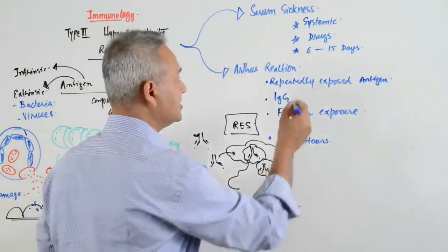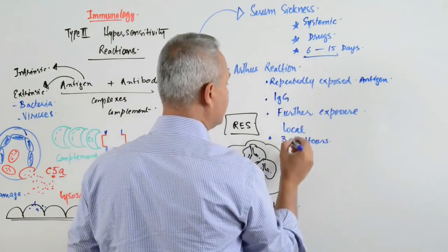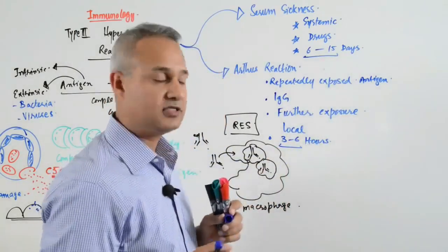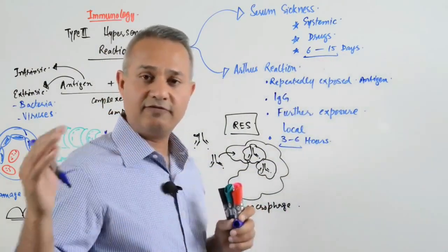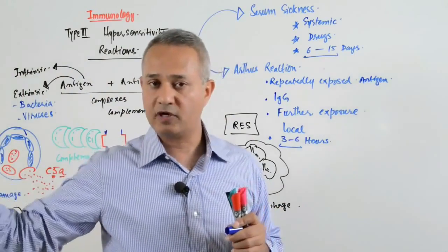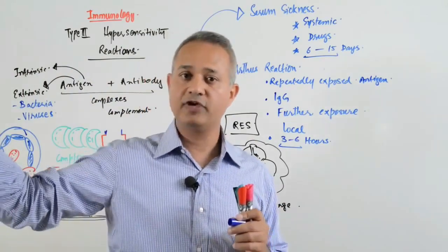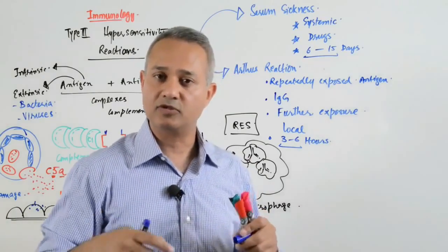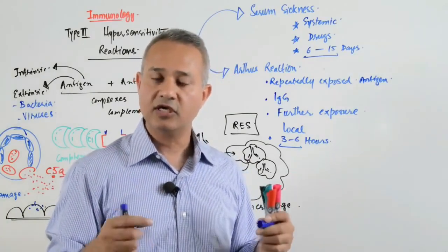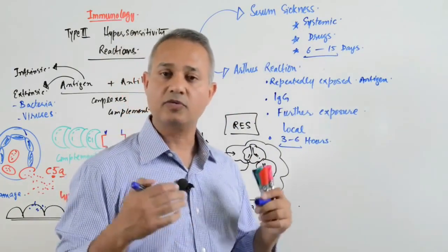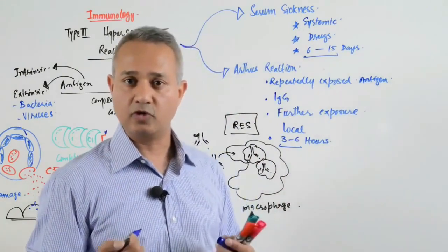For USMLE questions, the key is: did it occur within 3 to 6 hours or within 6 to 15 days? For example, if a child comes to a doctor after having sore throat for about two weeks and now has renal problems or swelling and edema, this would be a type of serum sickness, such as post-streptococcal glomerulonephritis.